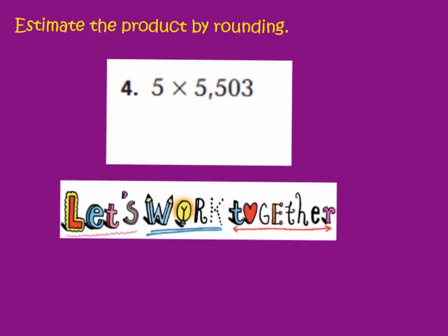Now remember, they want an estimate. So we're going to round the greater factor, which is 5,503. We're going to round this to the highest place value, which is the 1,000s place. Now this 5 in the 100s place is 5 or more. So my 5 in my 1,000s place is going to turn into a 6.